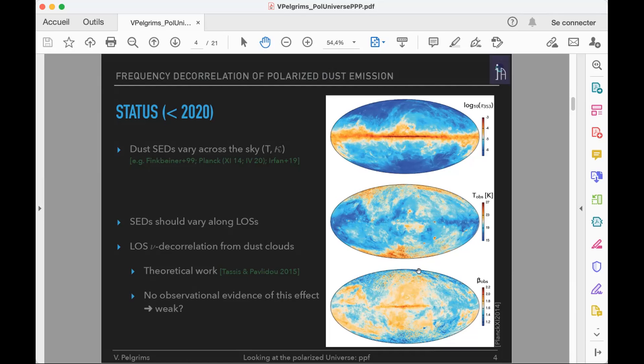Since we are not sitting in a particular place in our galaxy, it's quite evident that since there is SED variation across the sky, there will be SED variation along the line of sight. Line-of-sight frequency decorrelation from dust clouds has been studied and demonstrated in this paper in 2015, but yet there was no observational evidence of this effect, suggesting eventually that this effect is weak.